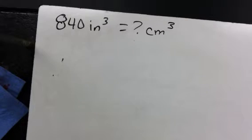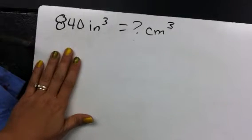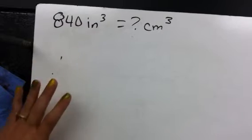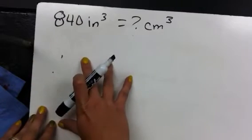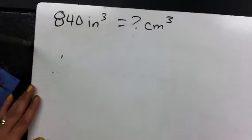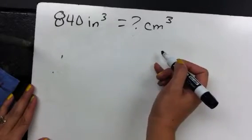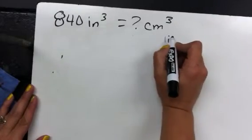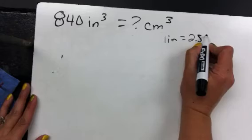All right, we moved on to some level fours. So in level three that we saw, sometimes we could have things that were squared and dealing with area. Well, now we're going to be dealing with volume. So we have 840 inches cubed, and we want to take that to centimeters cubed. And we still remember our one inch equals 2.54 centimeters.